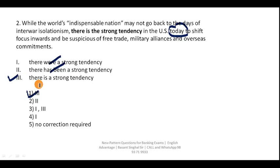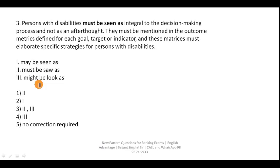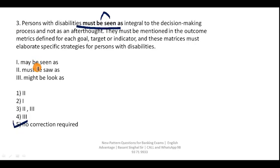Question 3: 'Persons with disability must be seen as integral to the decision making.' This phrase is correctly used. 'Must be seen' is a passive voice construction — 'must be' plus the third form of the verb, 'seen.' You cannot say 'may be seen as' because this sentence talks about something essential for the country. Overall this entire phrase is already correct, so your answer is no correction required.